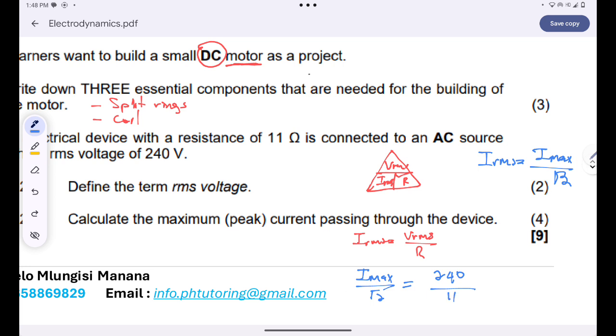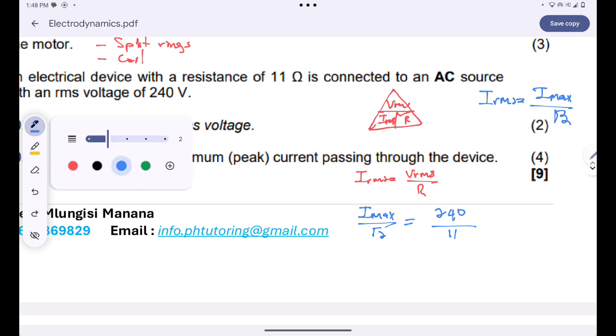So, whenever I come across I RMS, I'll simply substitute IMAX divided by root two. This will be equal to the RMS voltage, which is 240 volts, divided by the resistance, which is just 11. I can multiply both sides by the square root of two, such that this will cancel that. And then I'll be left with IMAX, which is the peak current, is equal to 240 divided by 11 multiplied by the square root of two. So, the maximum current is just 30.86 amperes.